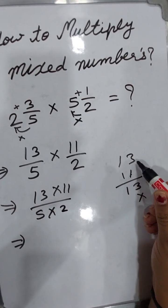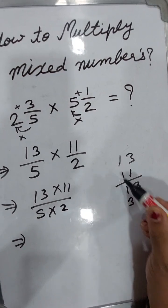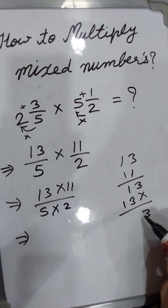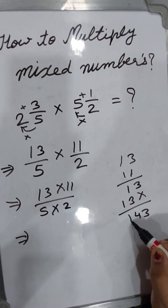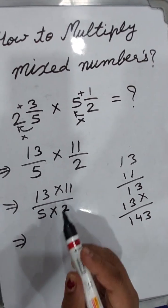Then 1 times 3 equals 3, and 1 times 1 equals 1. Add 3 plus 1 equals 4, then 1. So 13 multiplied by 11 equals 143.